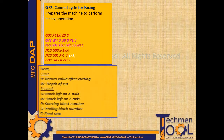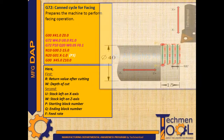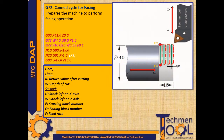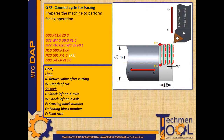G72 canned facing cycle. This code prepares the machine to perform facing operation. In the following program, after the rapid movement to position X41 Z0, the tool follows G72 facing cycle along with W, U and R values. R is the return value after cutting, and W is the depth of cut of the tool.